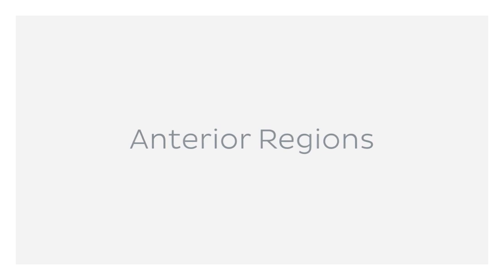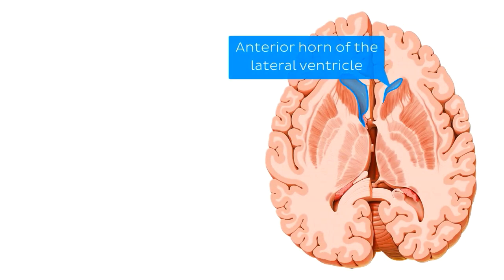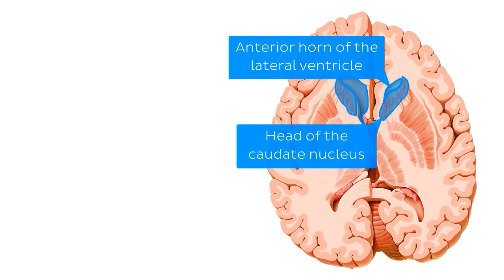So we're going to start our tutorial by looking at the anterior part of a horizontal brain slice, and learning to identify it based on the deep brain structures. And the first structures that we must become familiar with are the anterior horns of the lateral ventricles, and their relationship with the heads of the chordate nuclei. We're going to refer to these structures, in addition to other neighboring structures we find anteriorly in the horizontal section as the anterior regions.